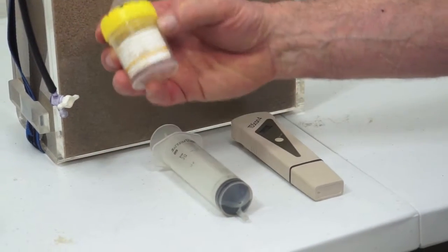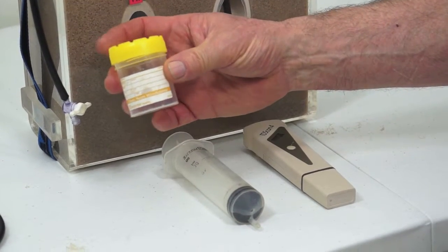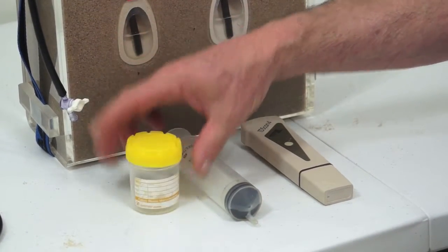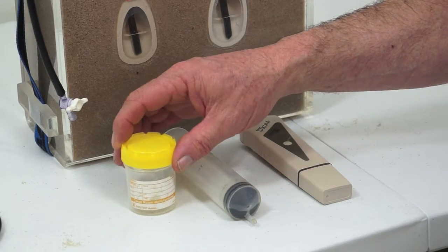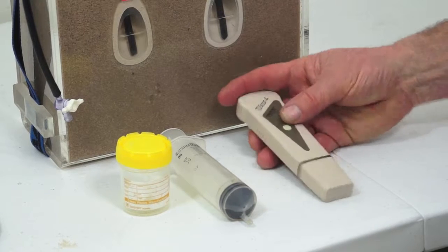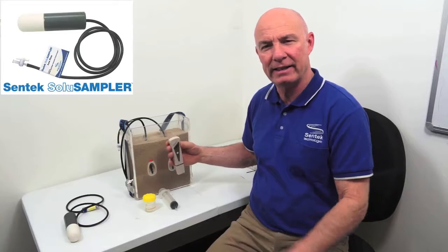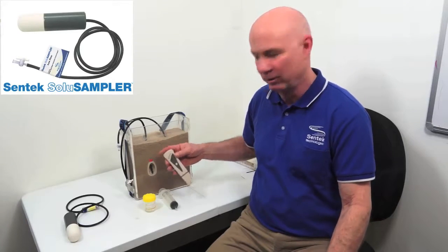You're going to need a vial to collect the sample in, and that vial's going to have to have a label that will allow you to write some information on it. If you reuse vials, flush them with distilled water and dry them out before use. And we're going to take a portable EC meter. This is useful because in the field, it's always good to get a measure then and there, in case anything happens to the sample after it leaves the field.